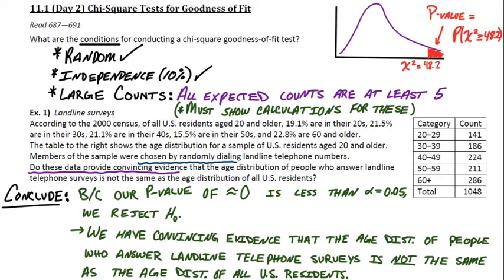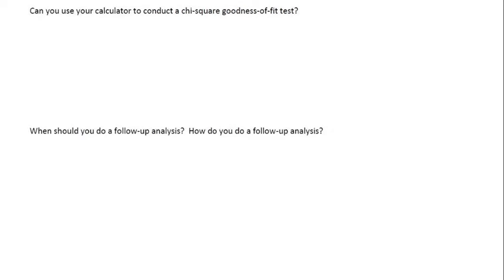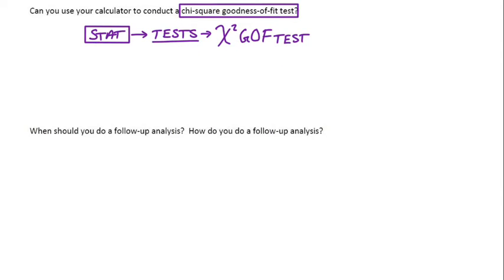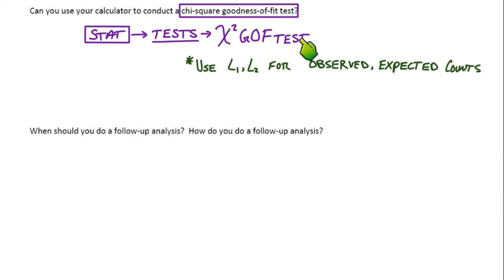We talked about chi-square CDF; now let's talk about the other command to run the entire test. The command is under STAT > TESTS and it's called the chi-square GOF test — chi-square G-O-F test. You can use this in the do step: put your observed counts in L1 and your expected counts in L2, and it will run the test, giving you the chi-square test statistic and the p-value. Just be specific — it's the chi-square GOF test, not the other chi-square test.